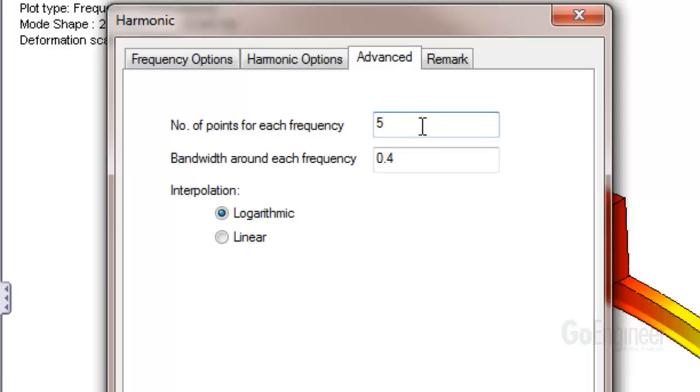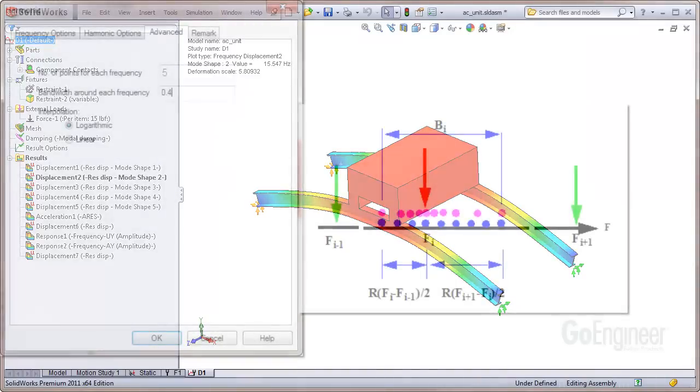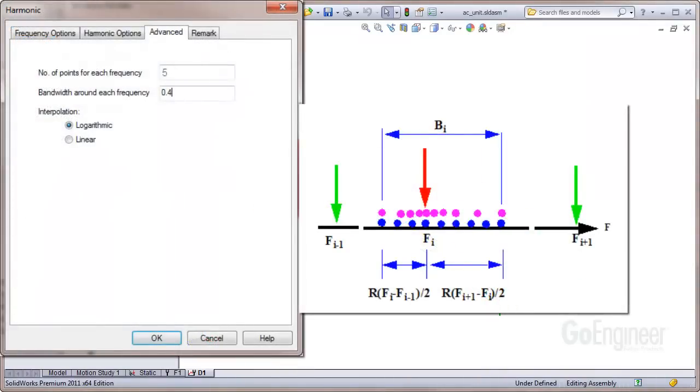Here we've entered 5 for the number of solution steps on either side of the natural frequency. Here's a line graph showing the meaning of the bandwidth setting. The bandwidth is centered around each structure natural frequency, in this case Fi with the red arrow.